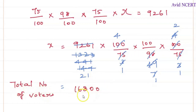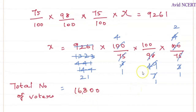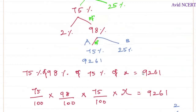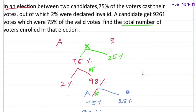The total number of voters enrolled is 16,800. Thanks for watching. If you have any doubts, please let me know in the comments, and I'll also be solving the same type of problem in the next session. Thanks for watching.